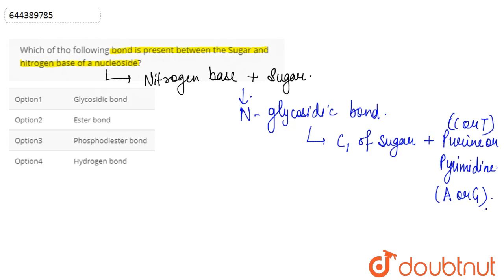Basically, this bonding is known as the N-glycosidic type of bond. If we look at the options, option one is glycosidic bond. So yes, this is our correct answer.